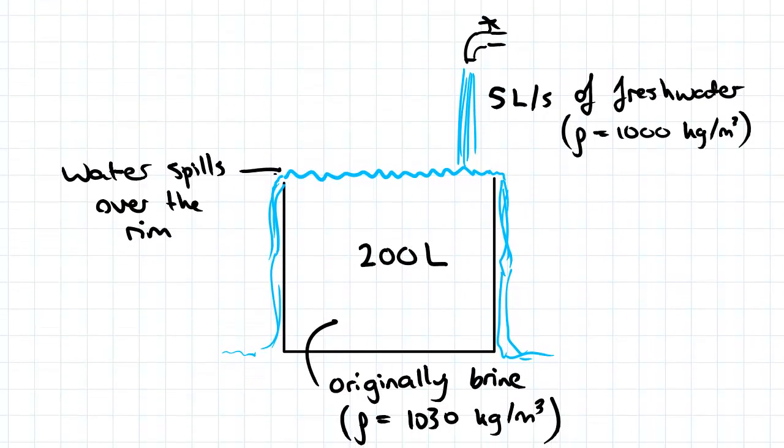So here's our situation: we've got an inflow of fresh water and there's brine initially in the drum, the 200 liter drum, and as the fresh water overfills the drum it spills over the side.